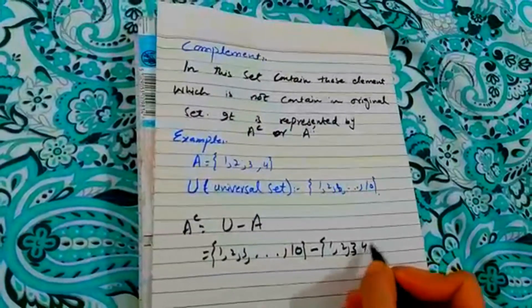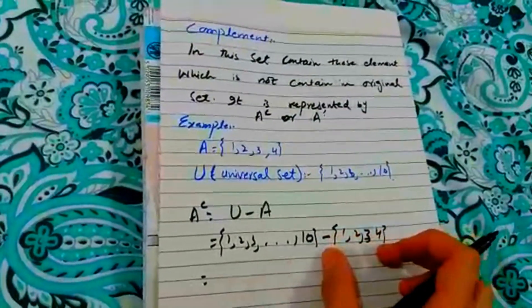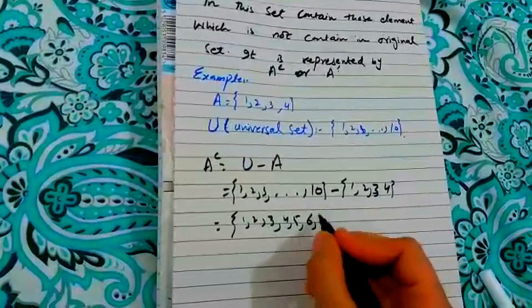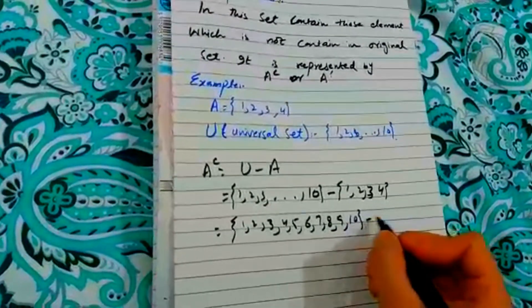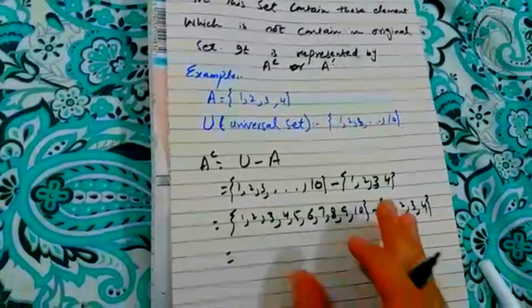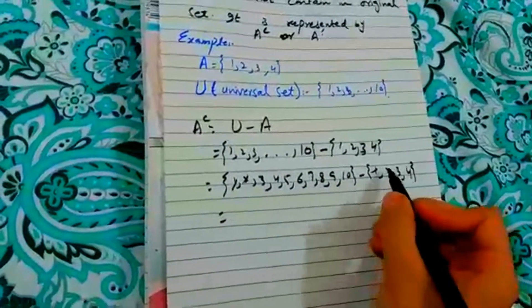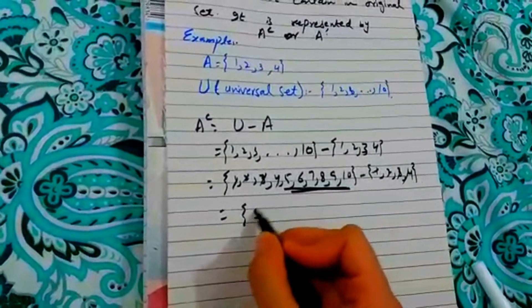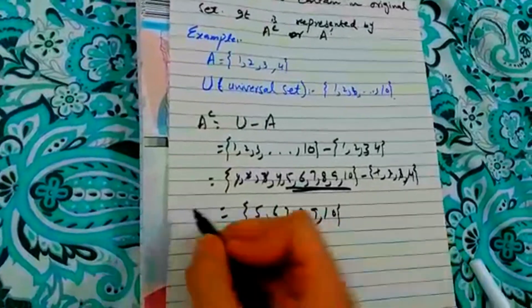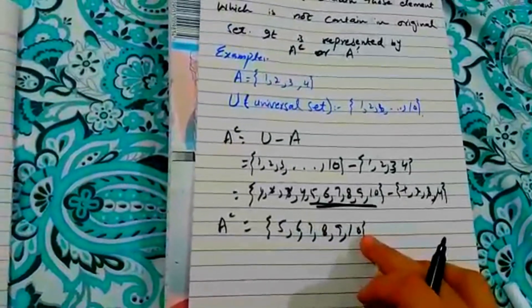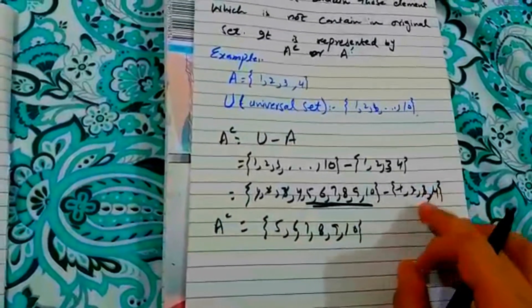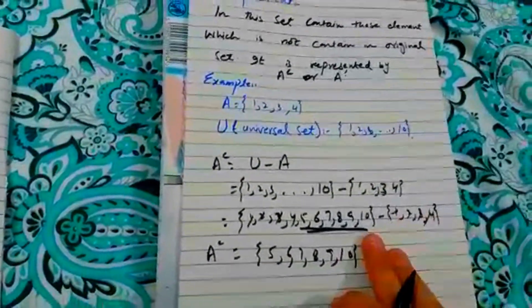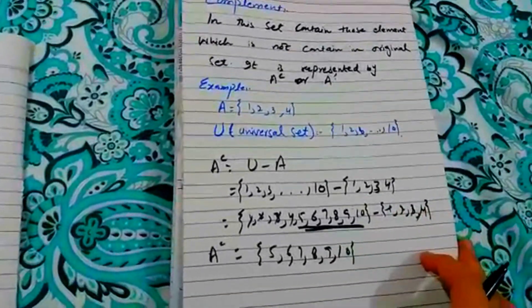A is {1, 2, 3, 4}. You can do it directly, or write all elements 1 to 10, then minus {1, 2, 3, 4}. Cut 1 and 1, cut 2 and 2, cut 3 and 3, cut 4 and 4. The remaining elements are {5, 6, 7, 8, 9, 10}. So this is the complement — it shows the elements which are not present in set A, i.e., not present in the original set. This was the definition of complement.